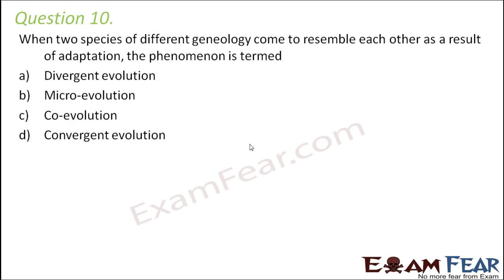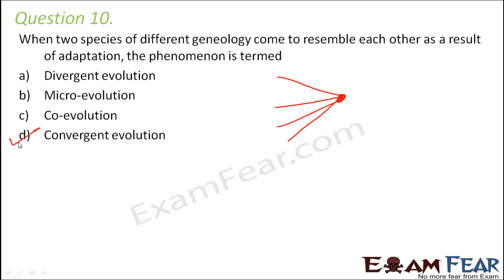Question number 10. When two species of different genealogy — that means of different genetic makeup, so two unrelated groups — come to resemble each other as a result of adaptation, just for their survival they made changes to their body such that they started resembling each other. Remember it this way: different, unrelated species all reach a common point — they are converging. So this is an example of convergent evolution.